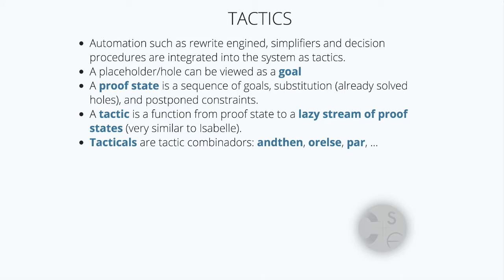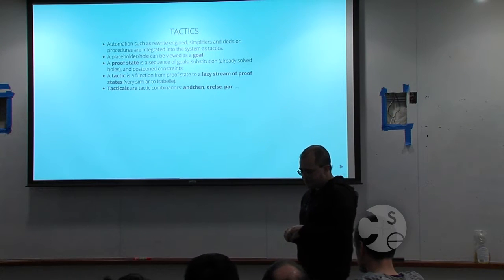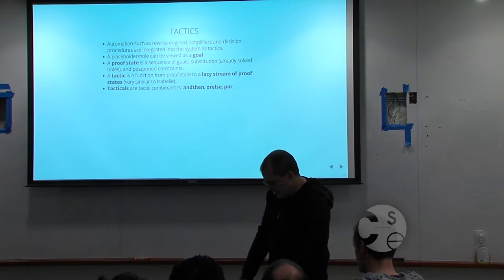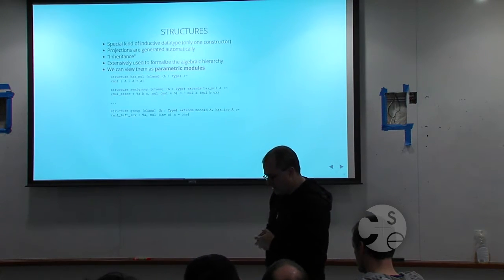Tactics are the gateway to automation. In Lean we view the tactic framework as where you prepare the stage for invoking automatic procedures like the ones found in provers like Z3. You have combinators like any other proof assistant.